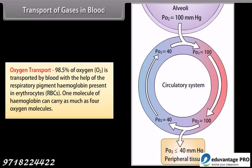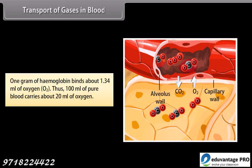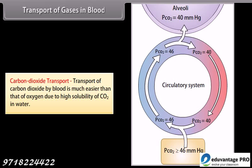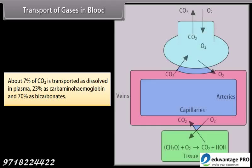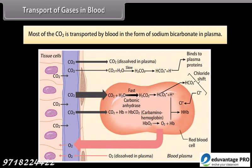Regarding oxygen transport, 98.5% of oxygen is transported by blood with the help of the respiratory pigment hemoglobin present in erythrocytes (RBCs). One molecule of hemoglobin can carry as many as four oxygen molecules; one gram of hemoglobin binds about 1.34 ml of oxygen. Thus, 100 ml of pure blood carries about 20 ml of oxygen. For carbon dioxide transport, about 7% of CO2 is transported dissolved in plasma, 23% as carbaminohemoglobin, and 70% as bicarbonates. Most CO2 is transported by blood in the form of sodium bicarbonate in plasma.